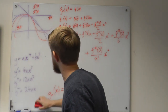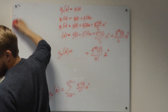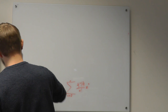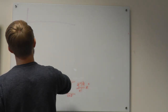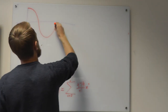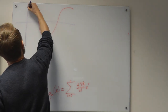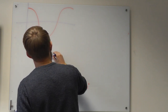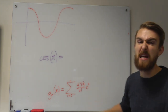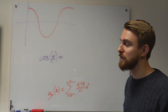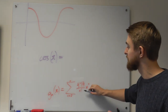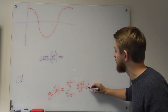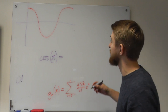We'll quickly do a Maclaurin example using the function y equals cos x. Our first term is the zeroth differential — just the function itself — evaluated at 0. Cos of 0 is 1, divided by 0 factorial (which is 1), multiplied by x to the power of 0 (which is 1), so we get just 1. Our zeroth-order approximation is just a flat line through that point.